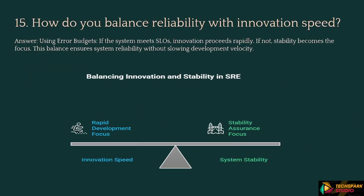Next: How do you balance reliability with innovation speed? Response: Using error budgets — if the system meets SLOs, innovation proceeds rapidly; if not, stability becomes the focus. This balance ensures system reliability without slowing development velocity.